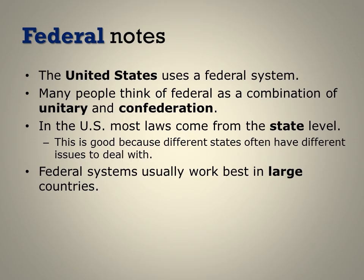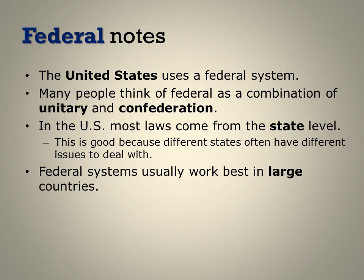Some notes about federal systems: the United States uses a federal system. Many people think of it as a combination of both unitary and confederation — the best of confederation in that individual state or regional governments maintain a certain amount of power, but also having a strong central government like in a unitary system. In fact, most laws come from the state level. This is a good thing because different states have different needs, like Alaska needing laws regarding snowmobiles and polar bears, which you don't need in a state like Florida. Federal systems usually work best in large countries and tend to be too complicated to function in a small country.